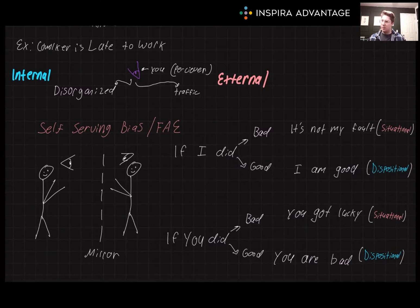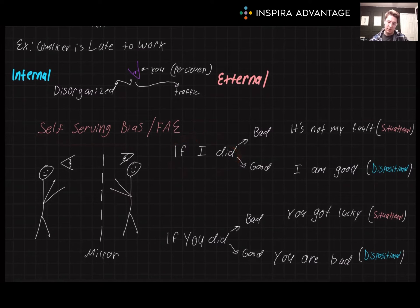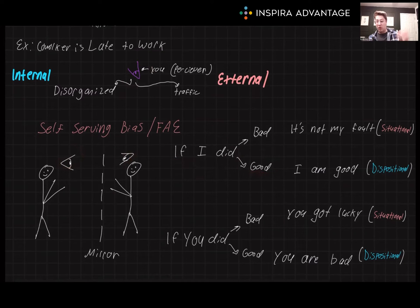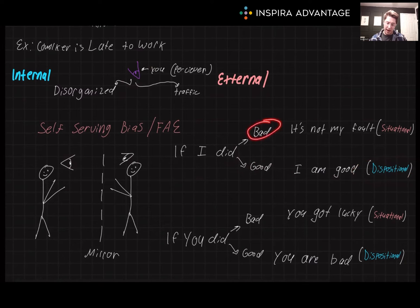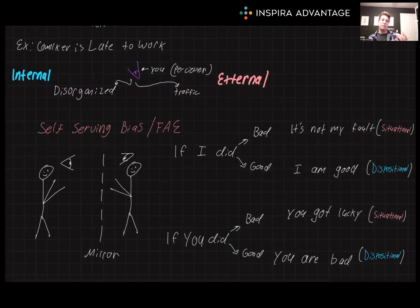For the self-serving bias, the observer is looking at yourself like in a mirror. If I do something good, I would think I'm a great person, that's why I do good things — a dispositional approach. Whereas if I do something bad, I'm more likely to blame it on external circumstances. For example, I didn't brush my teeth this morning, but it's because I was busy, not because I'm a gross human being.